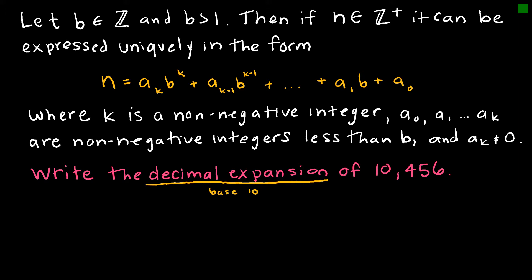So n is just going to be the number we are dealing with, and it must be positive. We can write it in the form a_k times b to the k, plus a_(k-1) times b to the k minus one, and so on all the way down to the end. Essentially what this means is: because I'm dealing with base 10, b is my base.